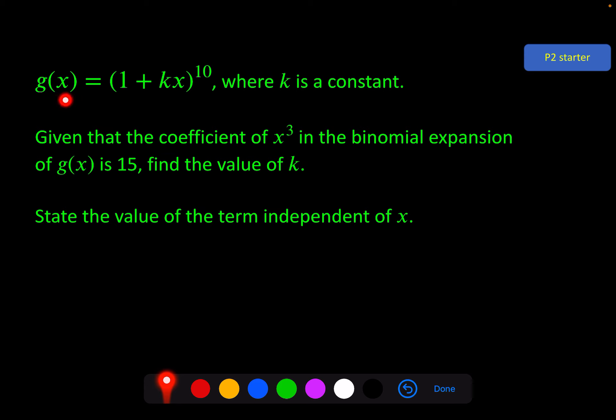So we've got the function given to us here, (1 + kx)^10, where we're given k as a constant. Don't worry about that k, you just use it as a normal number when you're doing the expansion. Then they're telling us given that the coefficient of x^3 in the binomial expansion of g(x) is 15, find the value of that constant k. And then there's a second part: state the value of the term independent of x.